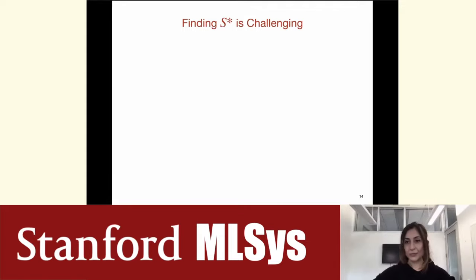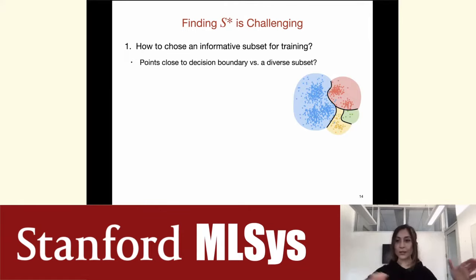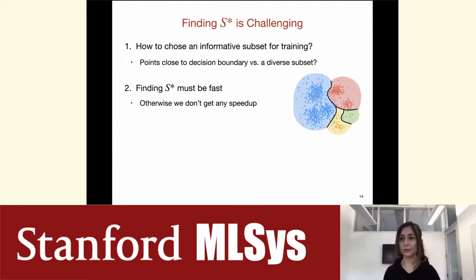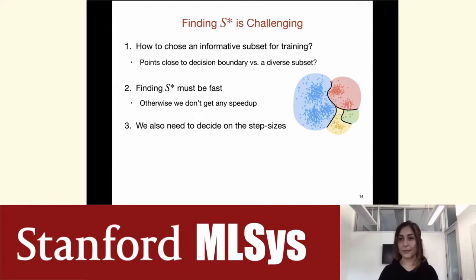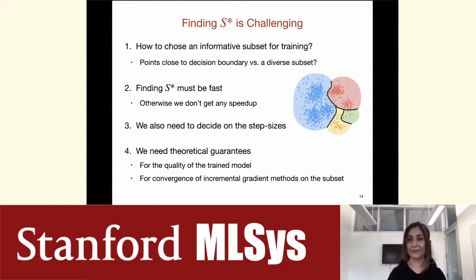This is a challenging problem for several reasons. First, it's not clear what these examples should be — should we select points close to the decision boundary, or points that give a good idea of the data distribution? Second, we want to find these examples very quickly, because if finding them takes too long, we don't get any speedup. Third, we need to decide on step sizes in gradient methods, and very importantly, we want to guarantee something about the performance of the model trained on these subsets — we want a principled approach, not something heuristic.